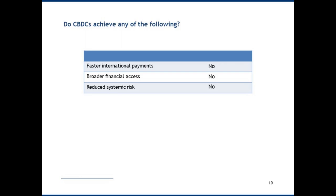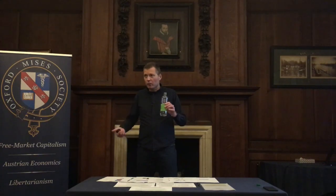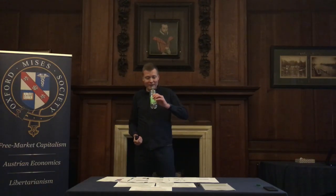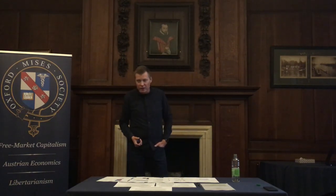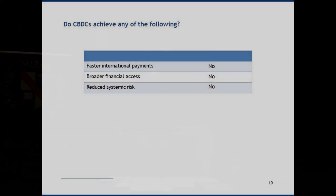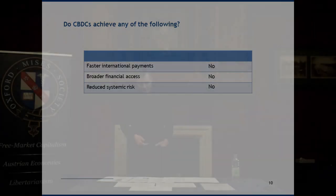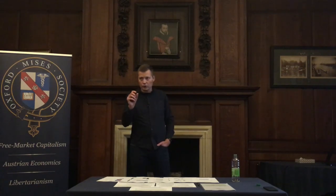Do CBDCs achieve faster international payments? I don't think so — I've not seen any models that would convince me. When people wanted to help Ukrainians, they resorted to buying Airbnb stays just to get money into people's hands, demonstrating the problems of our international payment system. Cash is the most inclusive financial asset there is, and CBDCs rely on some kind of bank account with know-your-customer legislation, which actually reduces rather than promotes financial access.